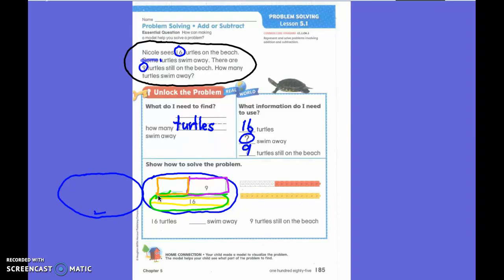So if I were to use my bar model as my cubes, I have sixteen cubes but nine of them are already taken. So how many cubes would I have left over that would fit in this box? That would be my answer.